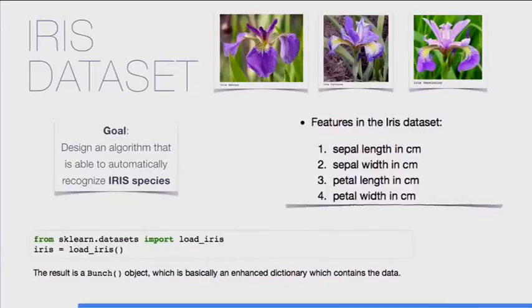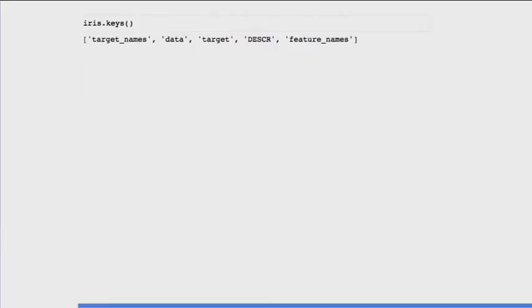Load iris and the iris object is a bunch object that contains different keys. It has the target names, the data, the target, a description of the dataset, and the feature names.